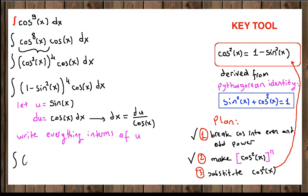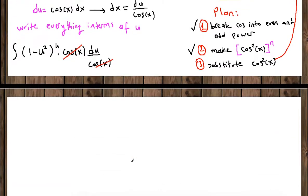Let's do that. So integral one minus, instead of sine, we're going to use u and u squared to the fourth power. And we have cosine of x here. And instead of dx, we're going to write du over cosine of x. As you can realize, cosines cancel out. And if we clean up, we're going to end up with one minus u squared to the fourth du.